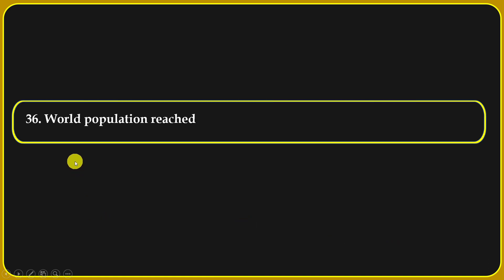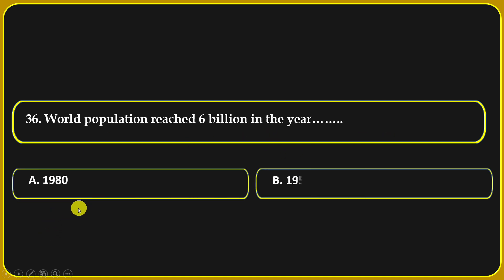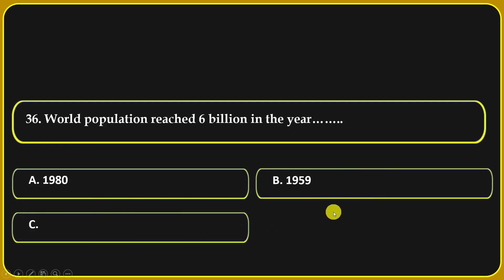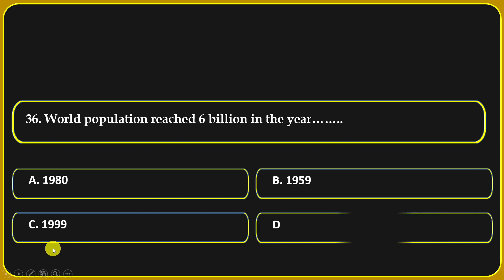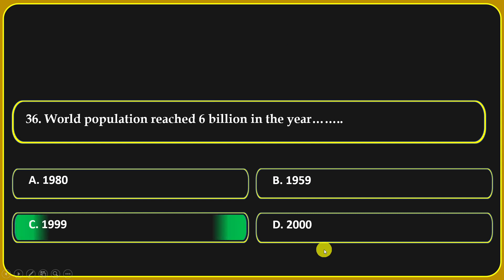World population reached 6 billion in the year: 1980, 1959, 1999, or 2000. 1999 is the correct answer.